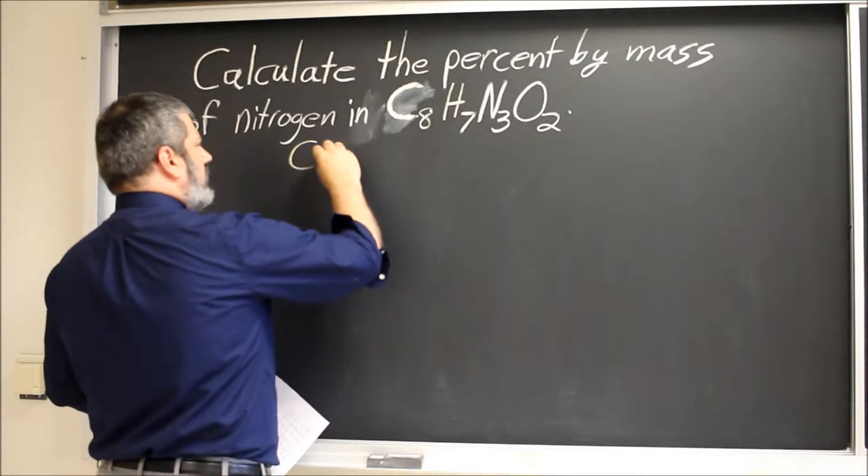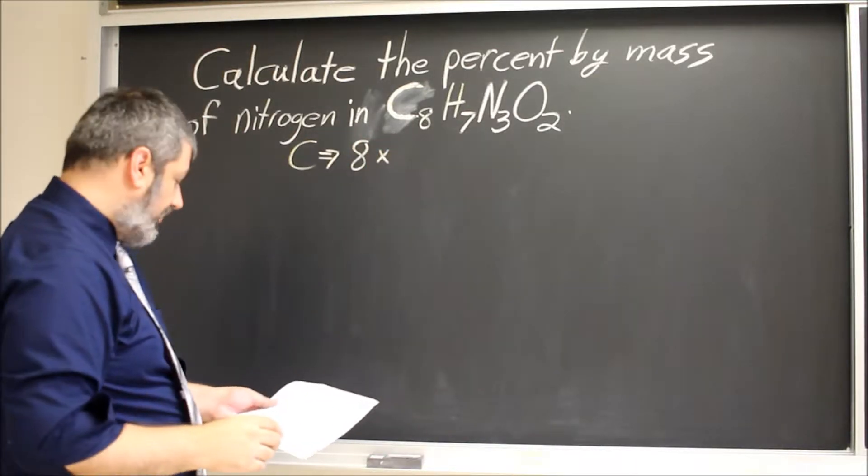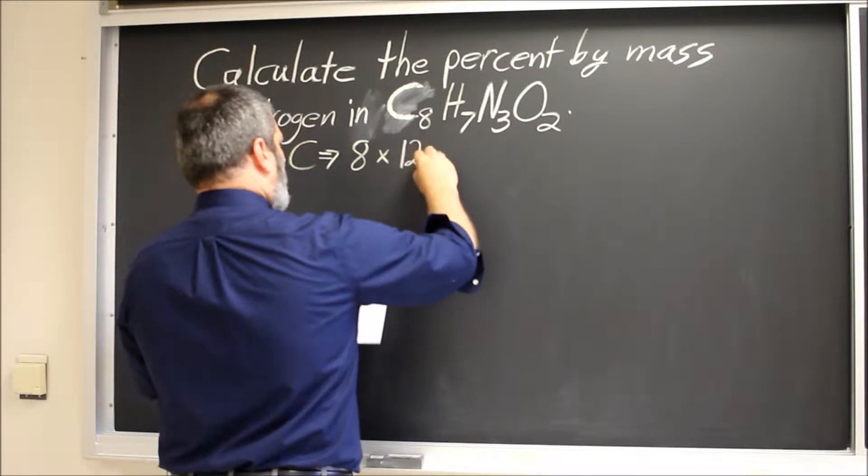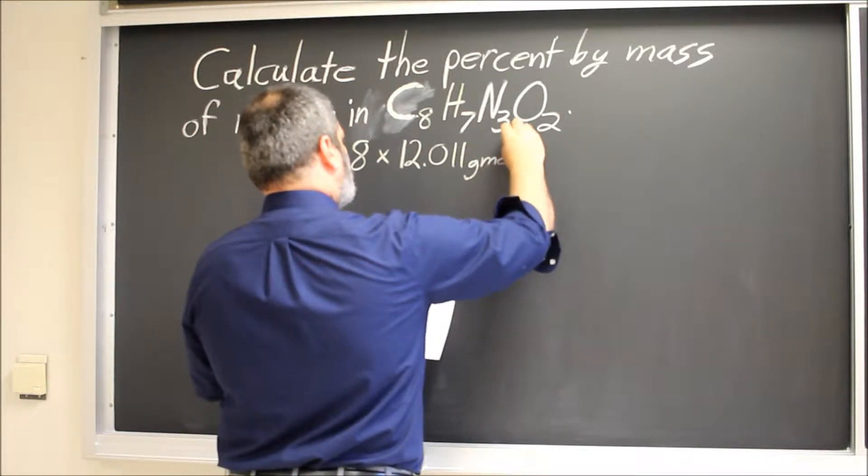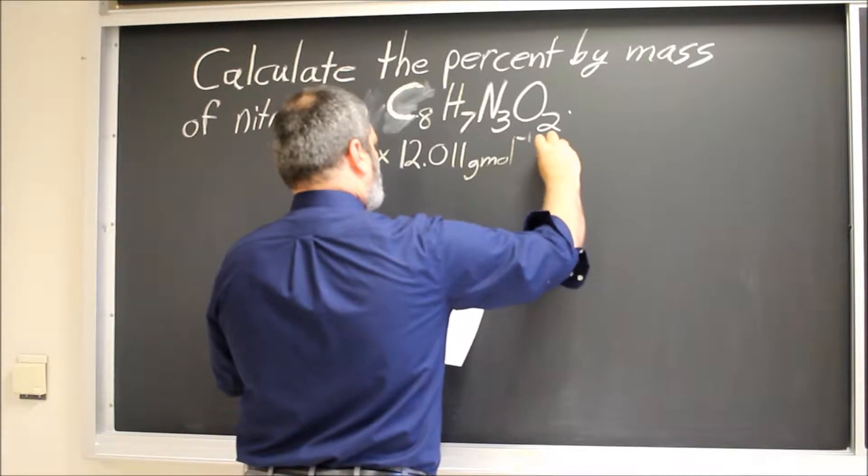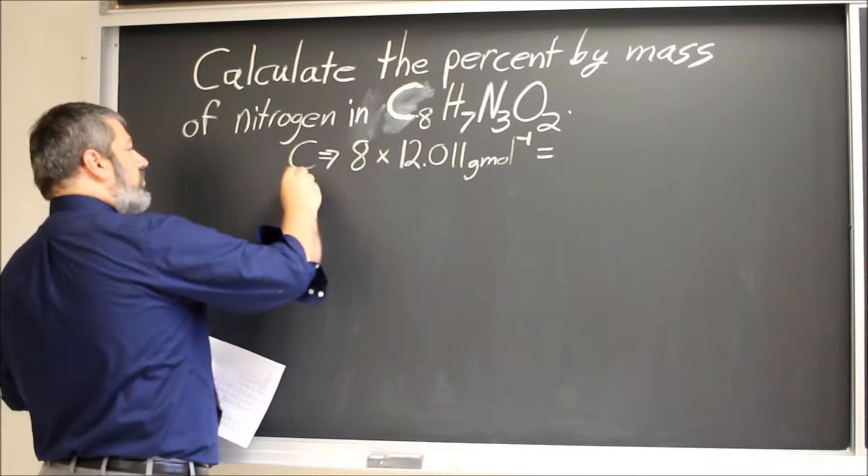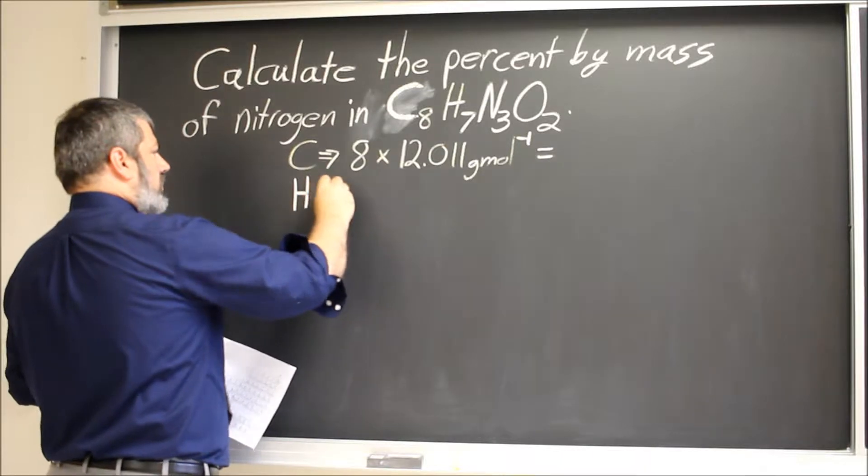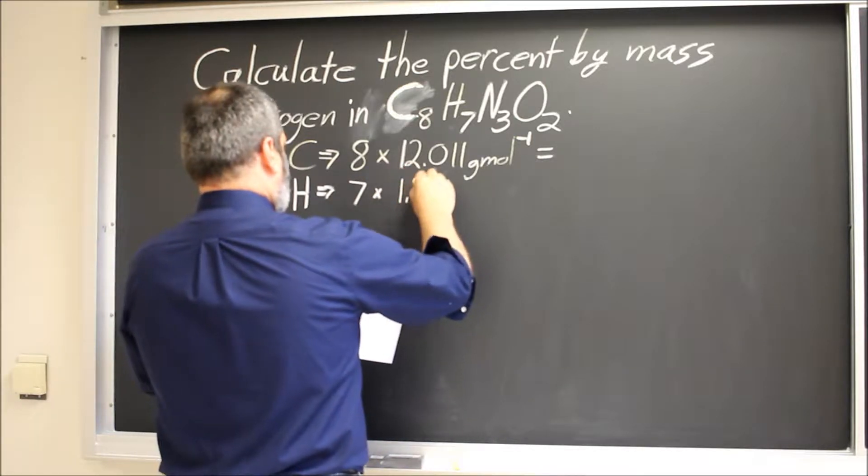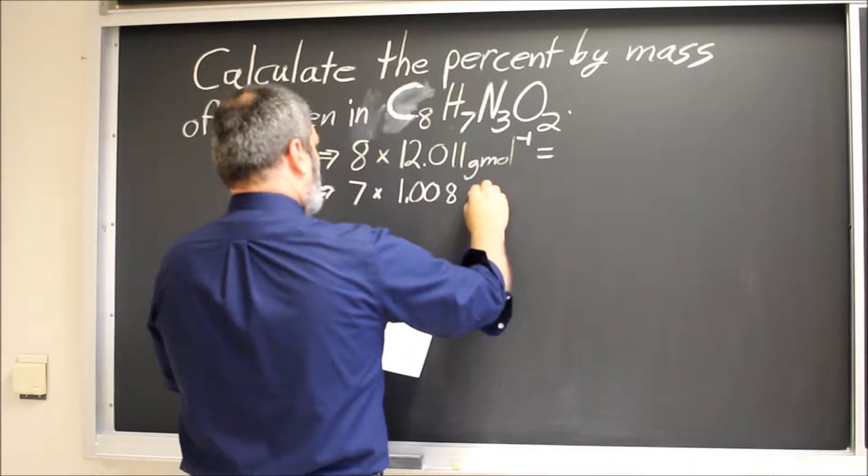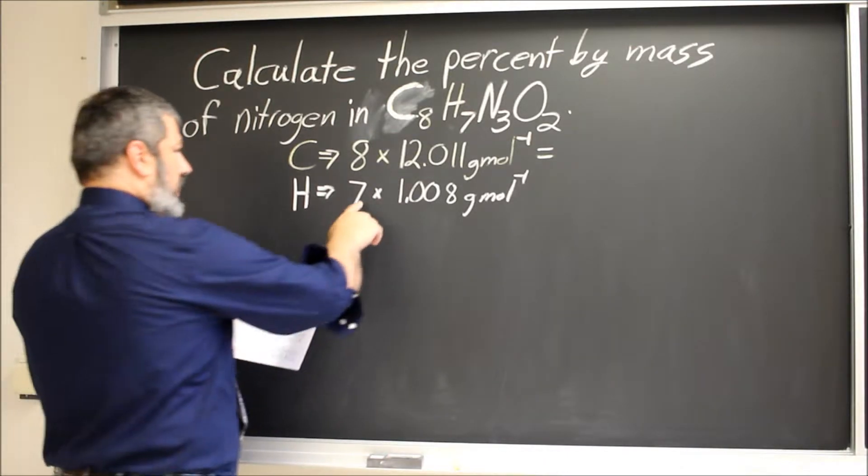So if we're looking at carbon, it's going to be 8 carbons times the molar mass of carbon, which is 12.011 grams per mole, and that's equal to a number that we'll calculate in a second. Hydrogen, we have seven hydrogens, so 1.008 grams per mole, but we have seven of them.